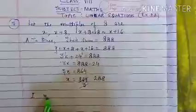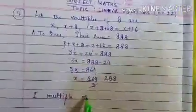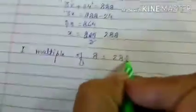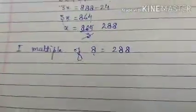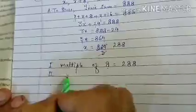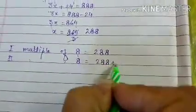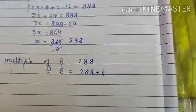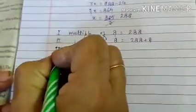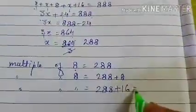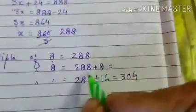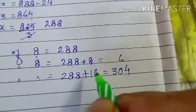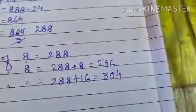So the first multiple of 8 is 288, which is required in the question. Second multiple of 8 will be 288 plus 8, which is 296. Third multiple of 8 will be 288 plus 16, which is 304.